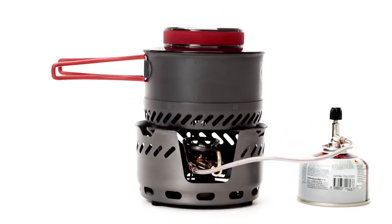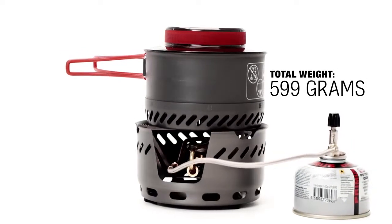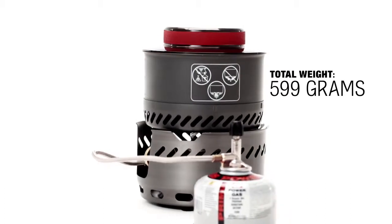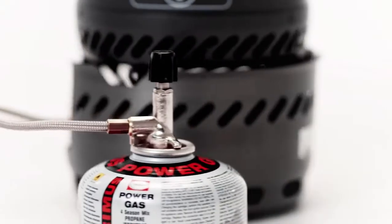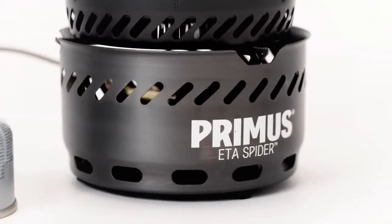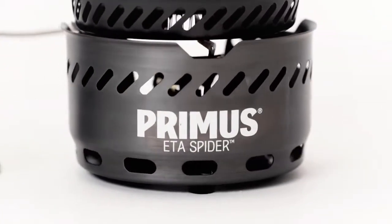Primus ETA Spyder is the crowning achievement of the Swedish company that has pioneered outdoor cooking around the world since 1892. With class-leading fuel efficiency and a blend of smart innovations, it's the stove you're most likely to find in the backpack of our engineers.